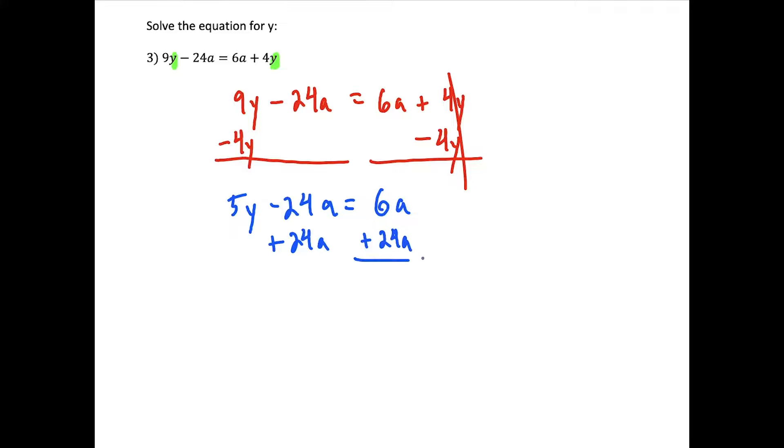Okay, for this question here, we're still solving for y, but now notice that the y terms are on both sides of the equal sign. So what we want to do is we want to get everything that has a y attached to it on one side and all the other non-y terms on the other side. So what we could do is we'll start by moving the 4y to the left. So we're going to subtract 4y on both sides. And what we have left here is now 5y minus 24a equals 6a. So then to get rid of this minus 24a, we're going to add 24a to both sides.